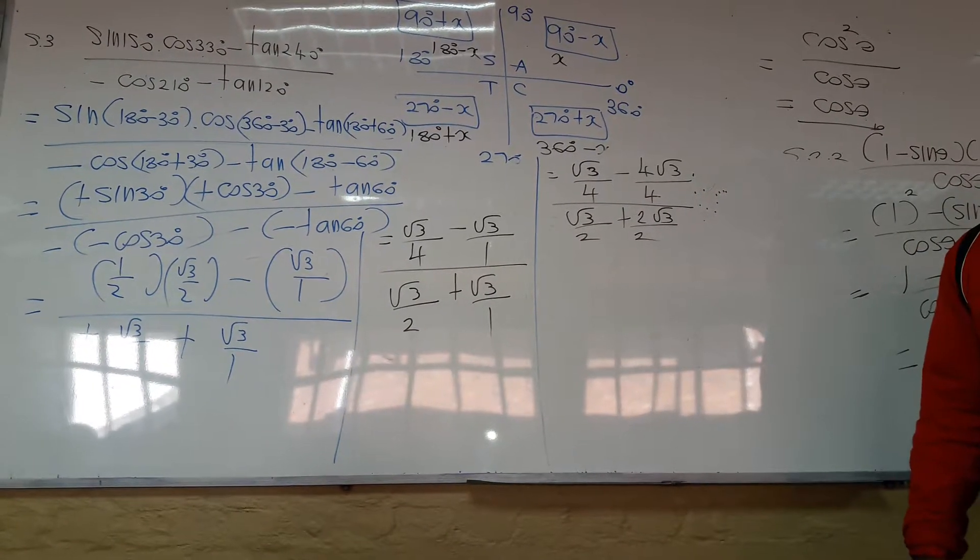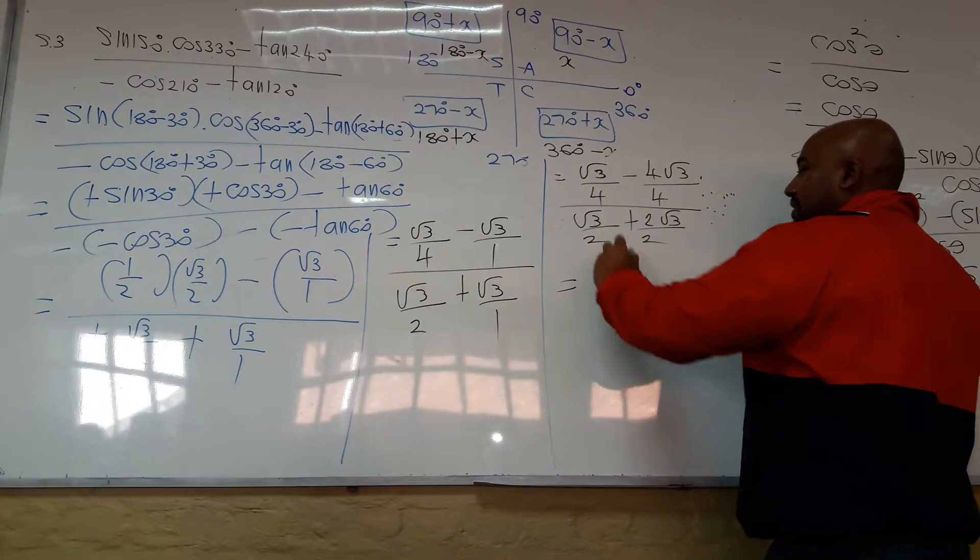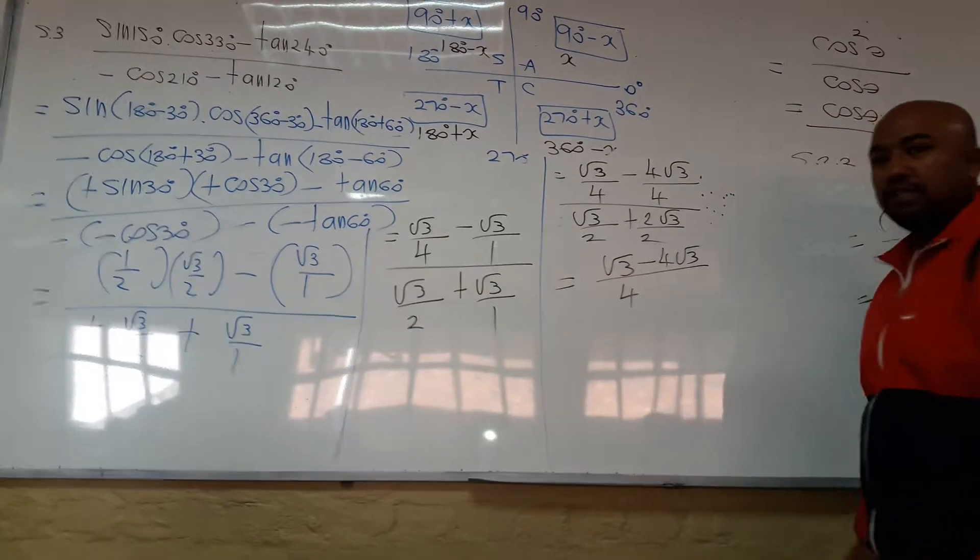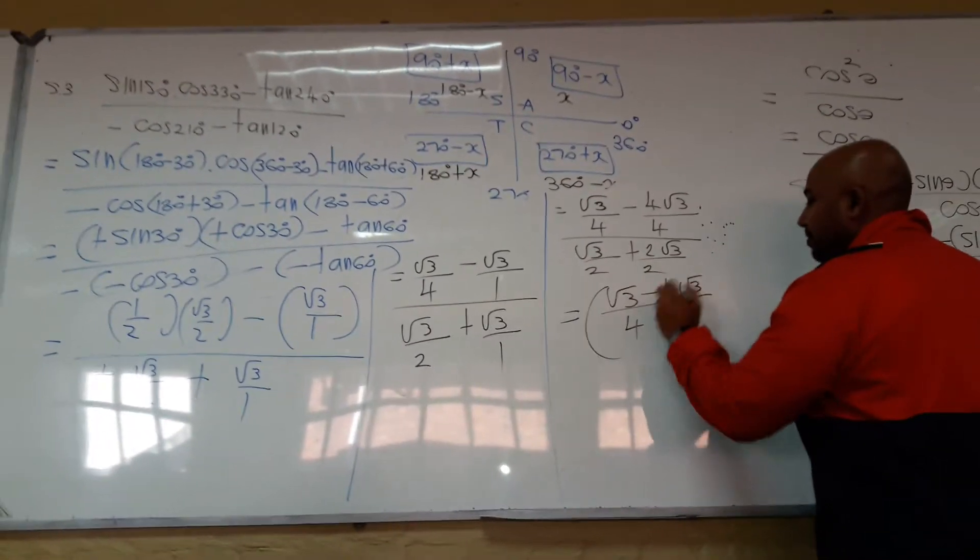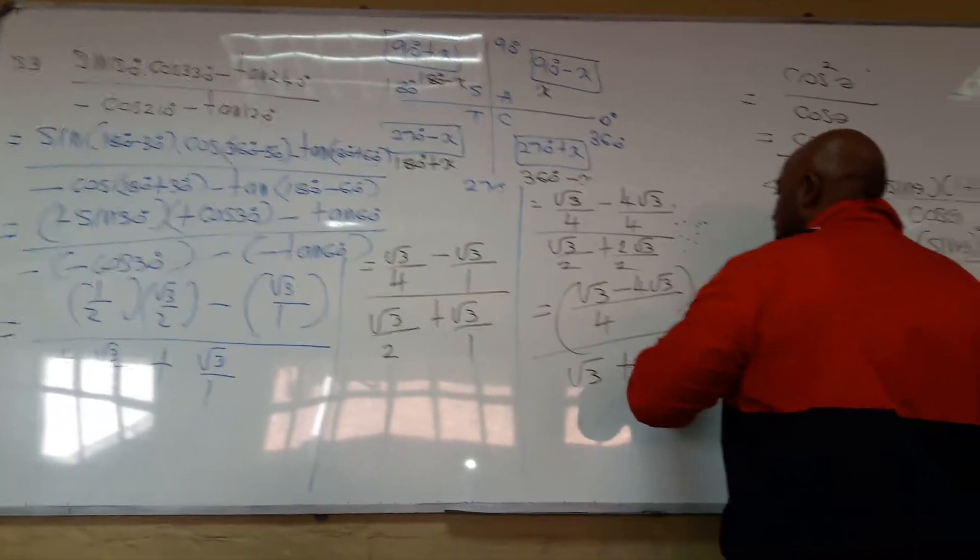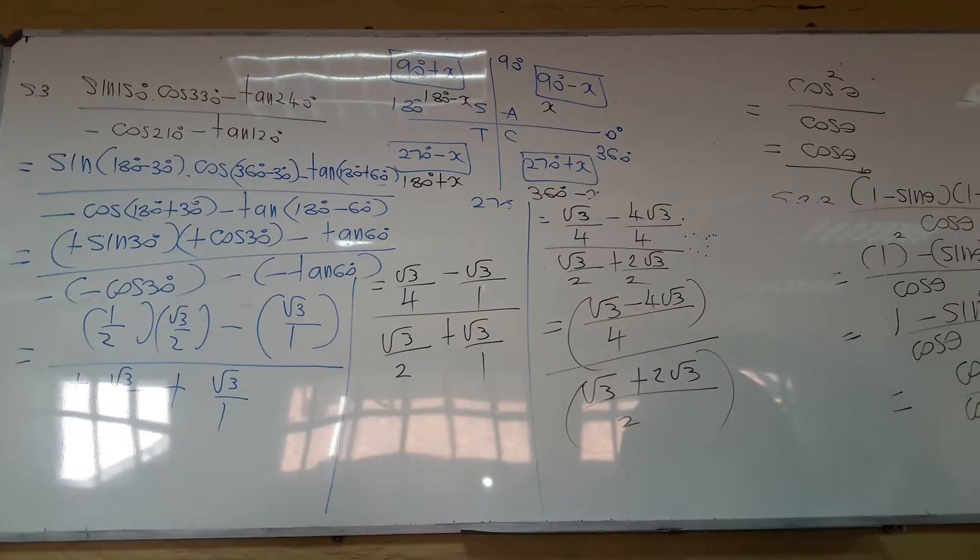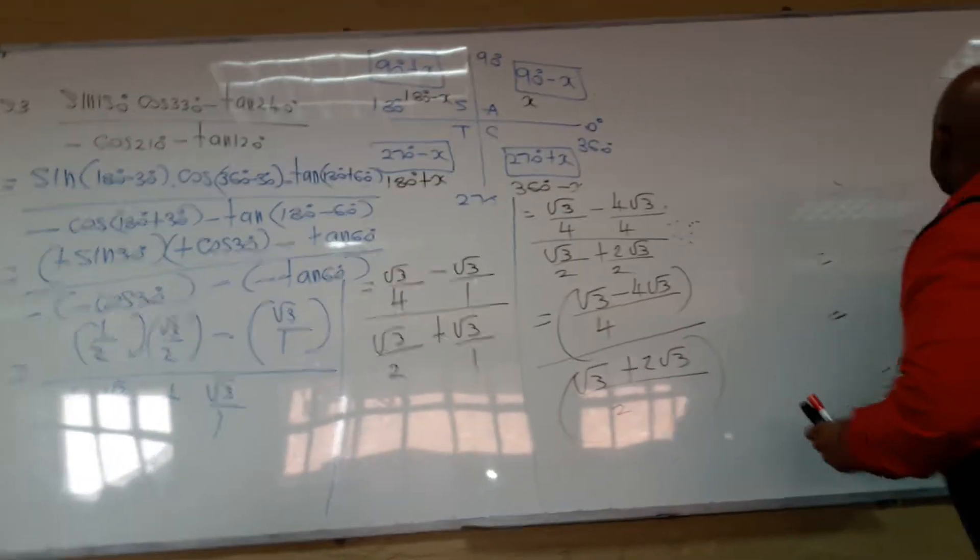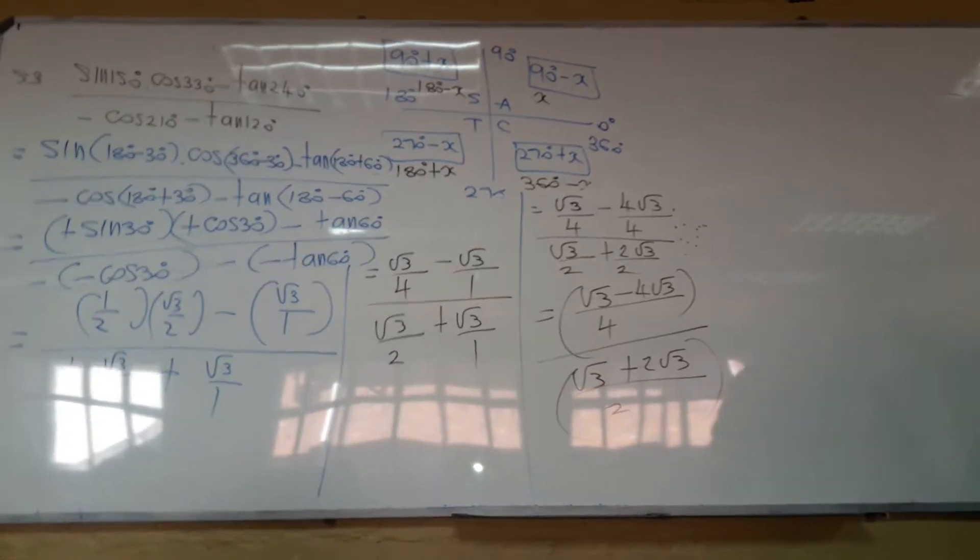All denominators are common now. So therefore, this will be square root 3 minus 4 root 3 all over 4 on the top. And here we got square root 3 plus 2 root 3 over 2. In the bottom, that is LCD, which most students have a problem with.